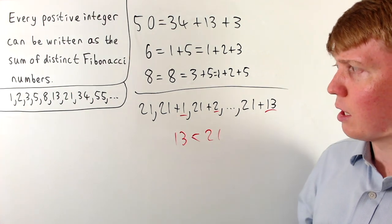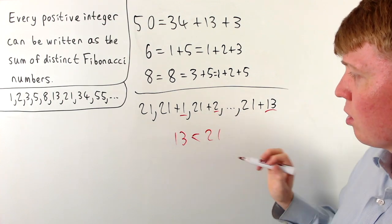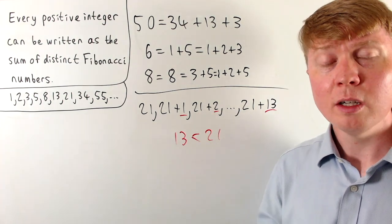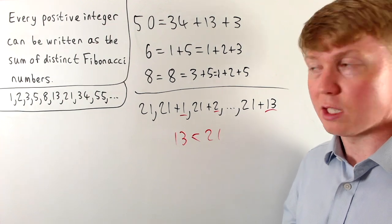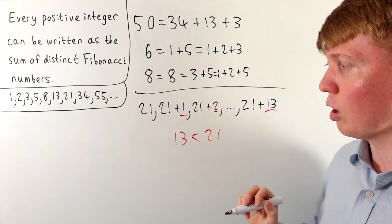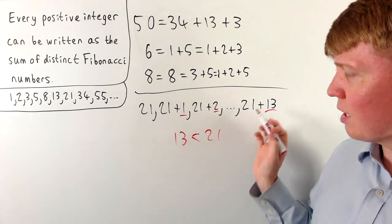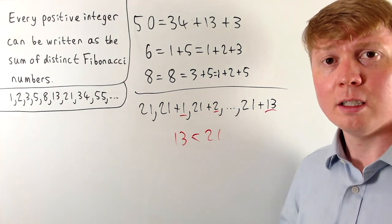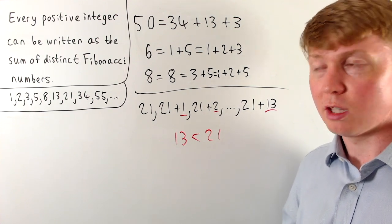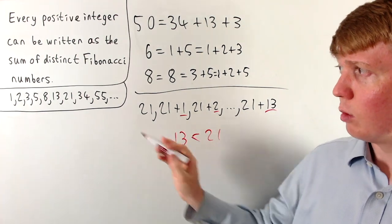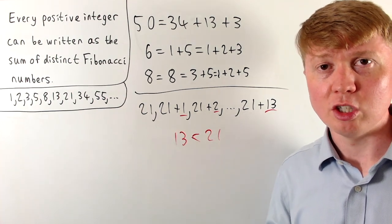So you can see this works in this particular example. All of these numbers from 1 to 13 are going to be made up of Fibonacci numbers smaller than 21, so we haven't used 21 and can add it to all of those. This knowledge of writing integers from 1 to 13 as a sum of Fibonacci numbers allows us to unlock the ability to write all numbers from 21 to 34 as a sum of distinct Fibonacci numbers.